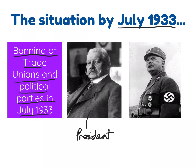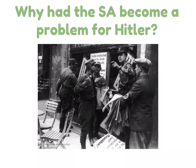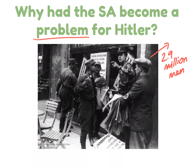However, Hitler still had a major problem, and that problem revolved around Ernst Röhm. Ernst Röhm was in charge of the SA, and this posed a potential threat to Hitler's ultimate power. By 1934, the SA was made up of 2.9 million men, making it a very powerful force.